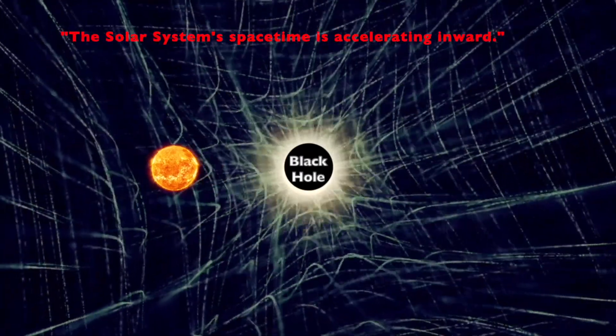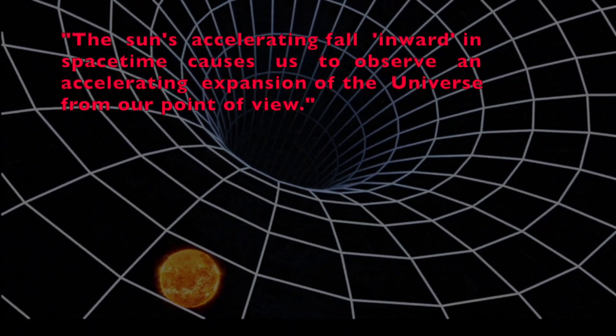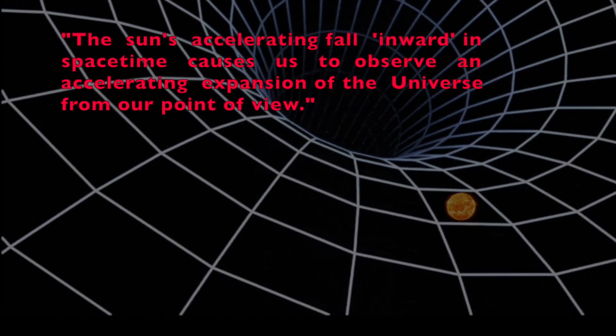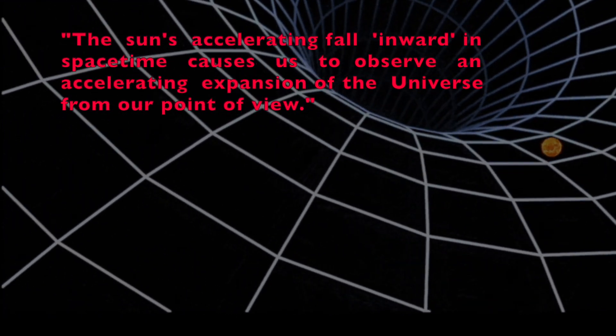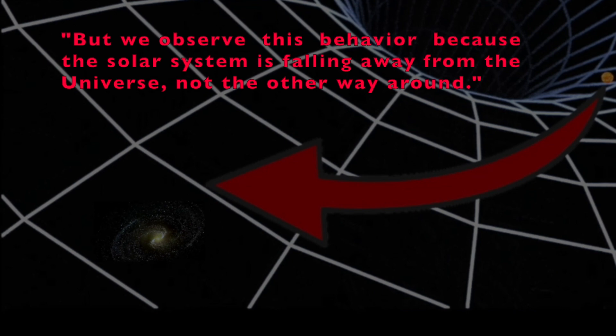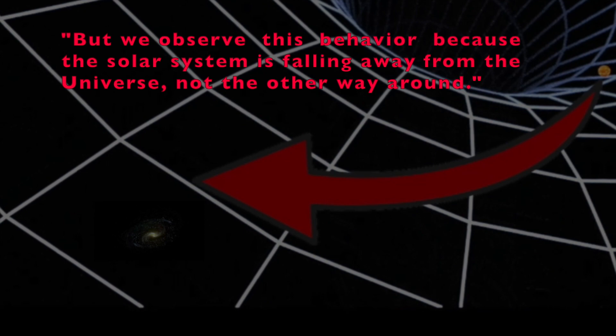The solar system's space-time is accelerating inward. The Sun's accelerating fall inward in space-time causes us to observe an accelerating expansion of the universe from our point of view. But we observe this behavior because the solar system is falling away from the universe, not the other way around.